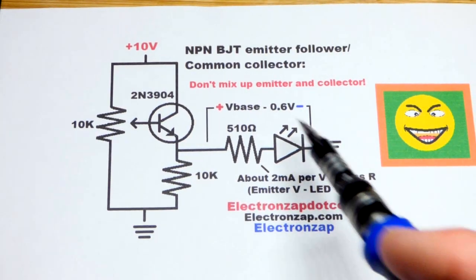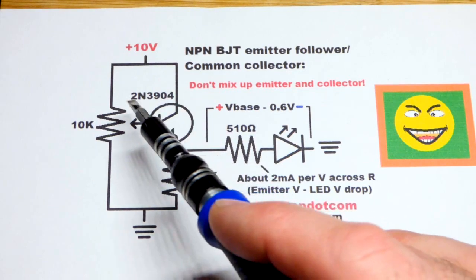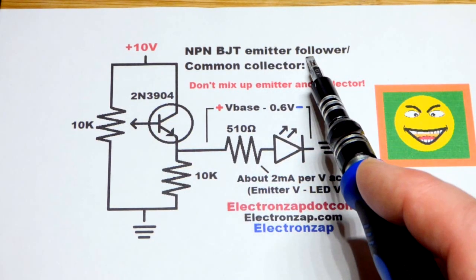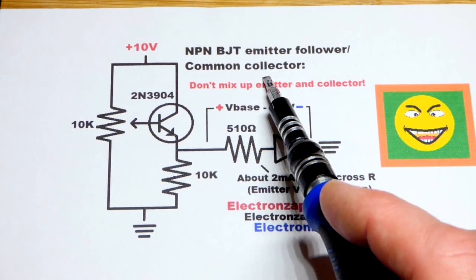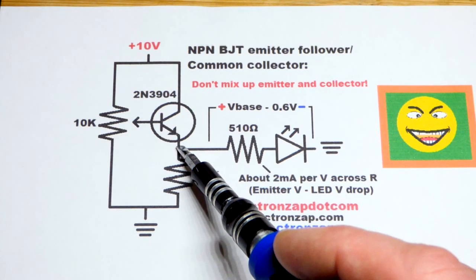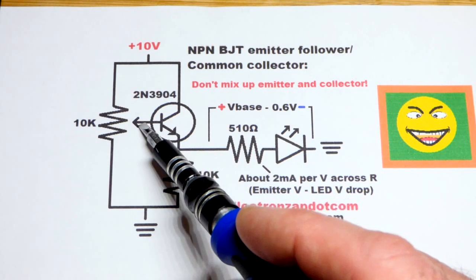In this video, we're going to look at an NPN bipolar junction transistor, the 2N3904, wired up as an emitter follower. You can also call it a common collector. I might sometimes call it a voltage follower. I think that's more commonly used with op amps, but in any case, I like that one because it's more descriptive of what it's doing.